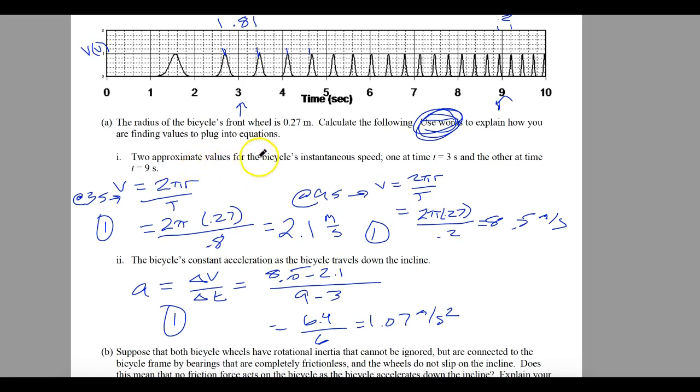They want you to know the approximate values for the bicycle's instantaneous speed, one at t3 and the other one at t9. So to find the speed at this point, we're going to find a difference here in time between the two peaks. So the difference between the two peaks is approximately about 0.8 seconds. And I did that by saying each one of these graduations here is 0.2.